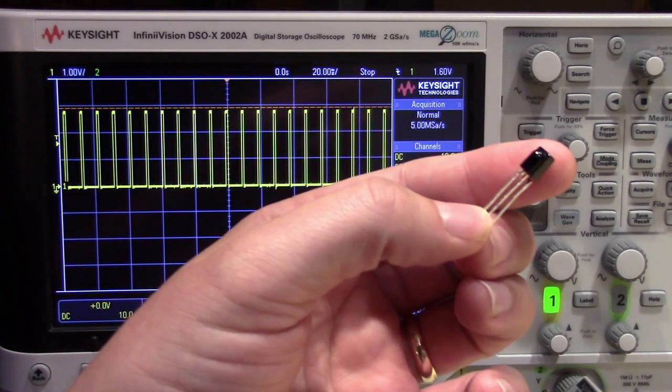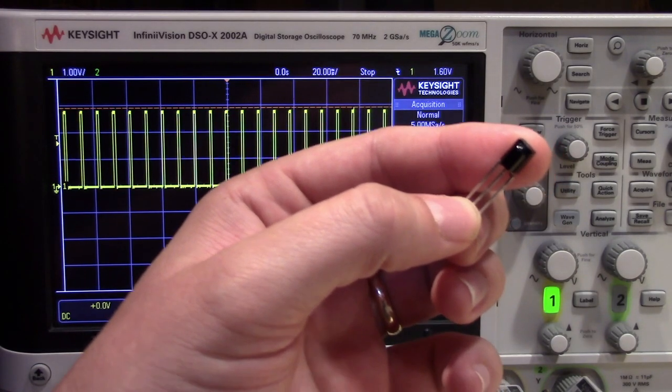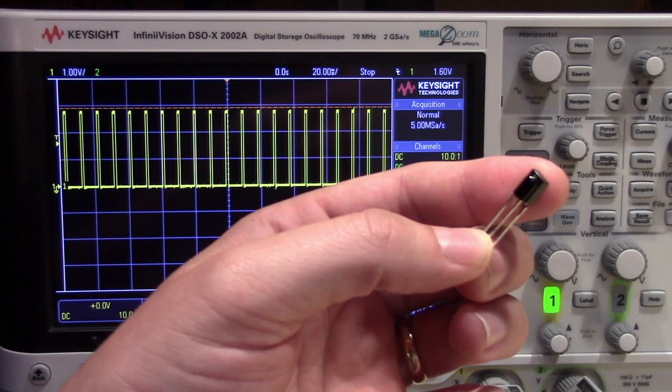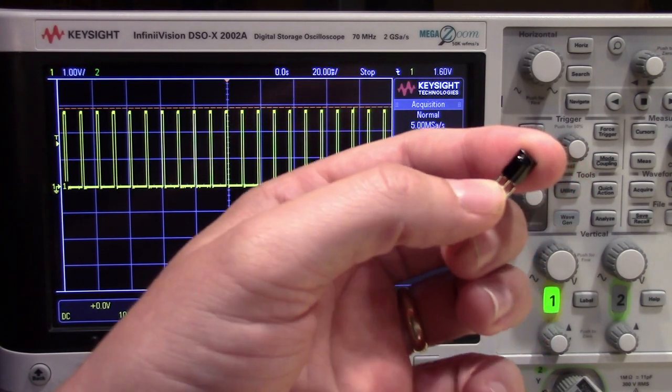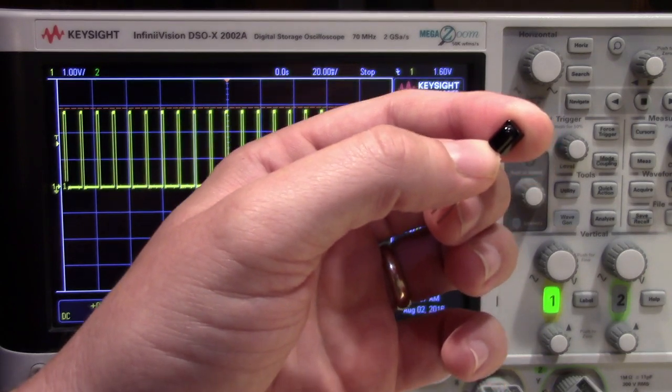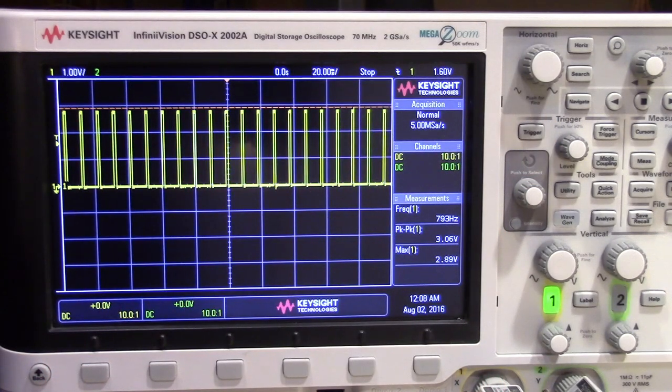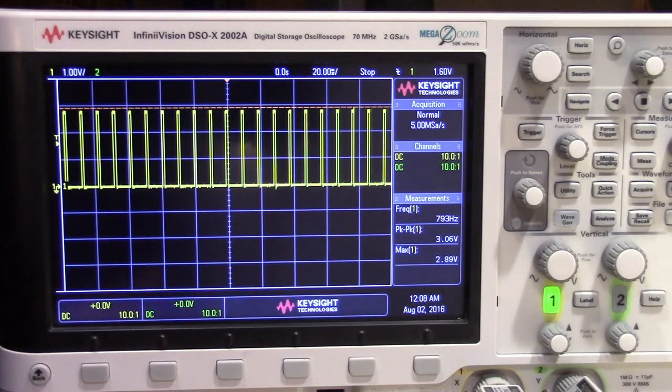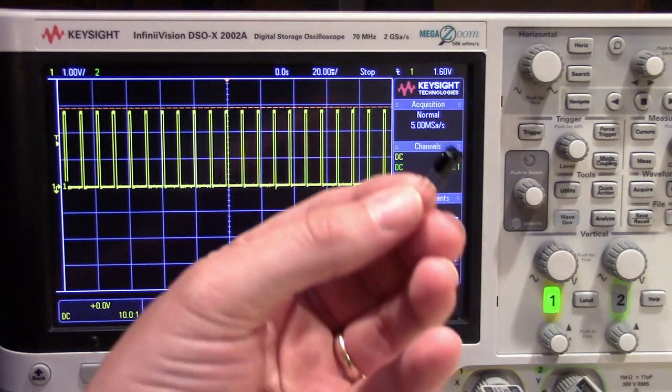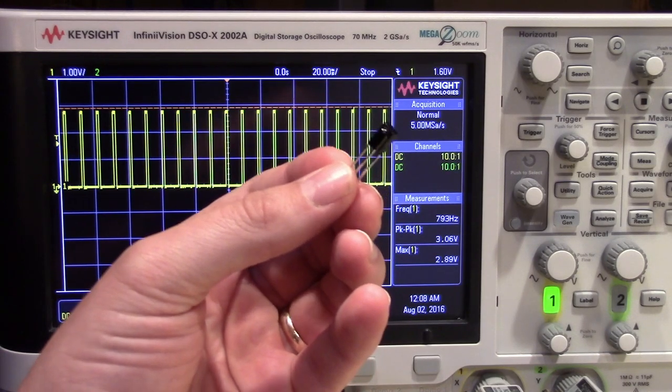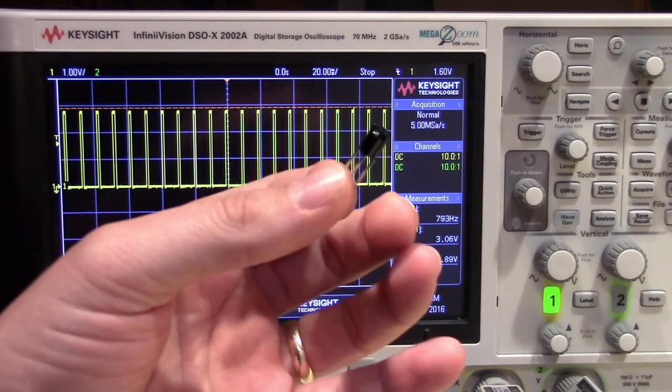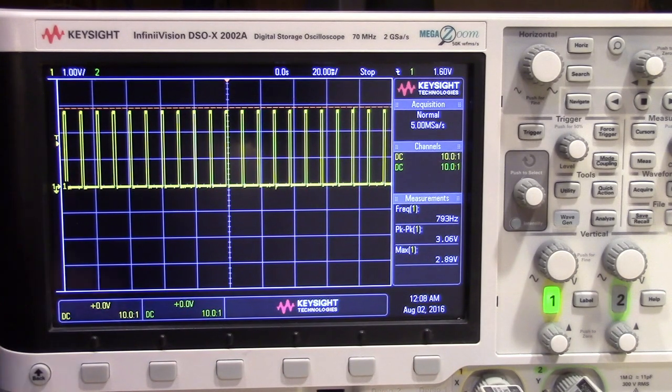The problem is that these are typically designed to capture modulated IR data. So the data is typically modulated in the 36 to 38 kilohertz range, such as if you're using a remote control for your TV or something like that. Now if you look at the IR data coming out of the phone's proximity sensor though, this is more in the range of 1 kilohertz or even could be much less than that. So these little guys have a bandpass filter in them that only allow the expected modulated frequency through. So they're pretty much worthless for trying to capture this kind of data.